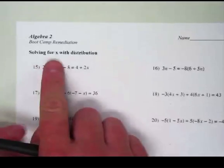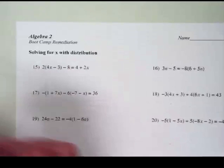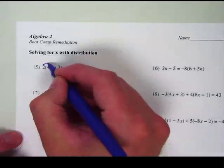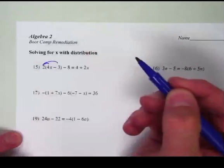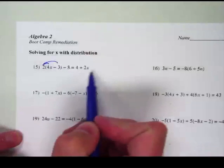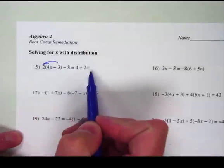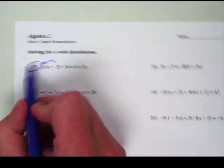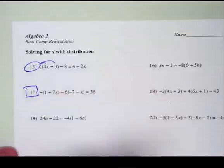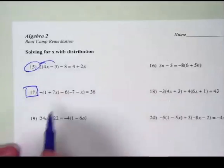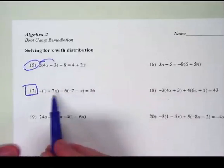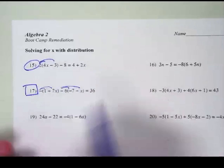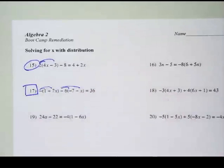In this particular case, number 15 is the first one, and I see a 2 outside of the parentheses. I know I'm going to have to give the two to each of those pieces, then combine like terms, then move the x terms around. I'm going to show number 15 and have you work on number 17. Number 17 has a whole bunch of minus signs that you've got to make sure you distribute to everything in order to get that right.